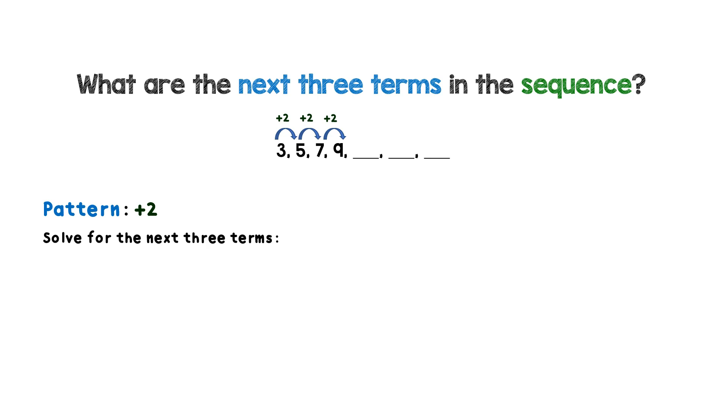First, use the last given number in the sequence, which is 9, and use the pattern to get the next number. So 9 plus 2, you will get 11.